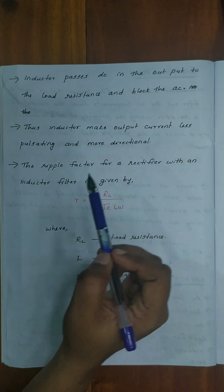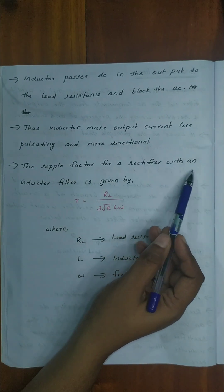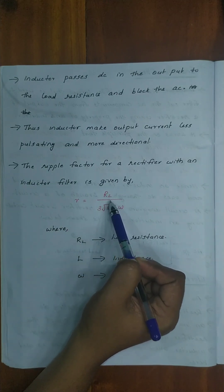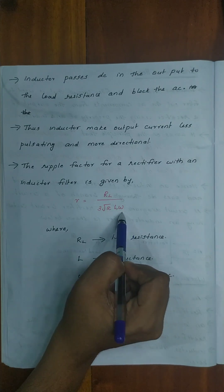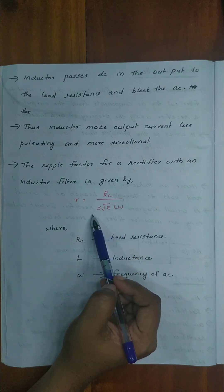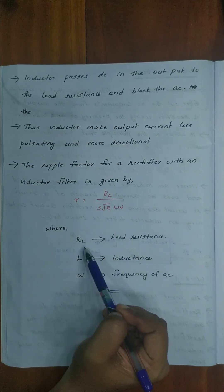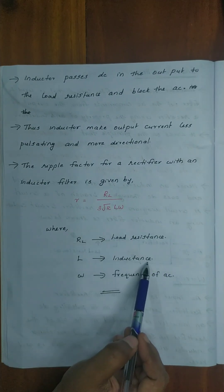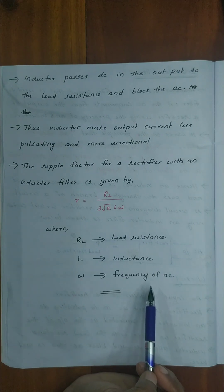The ripple factor for a rectifier with an inductor filter is given by R equals RL divided by 3 root 2 L omega. Here, R is the load resistance, L is the inductance, and omega is the frequency of AC.